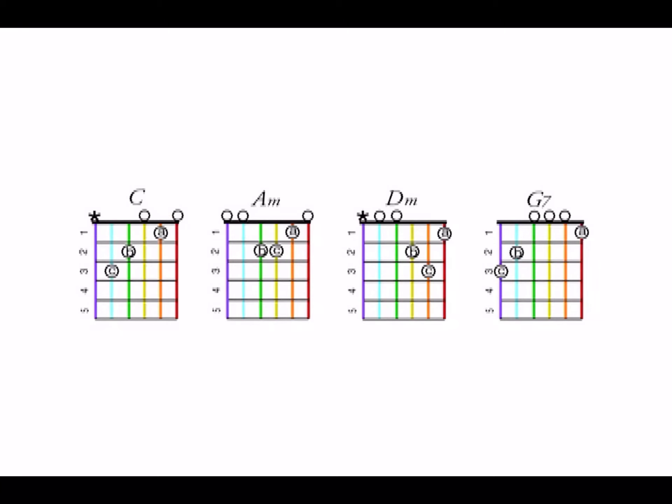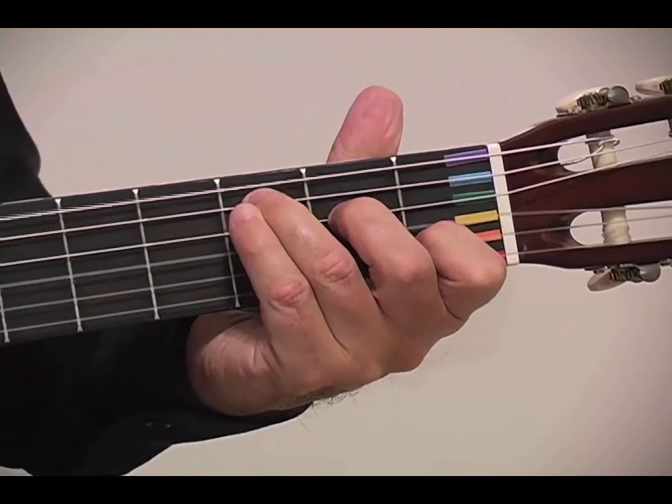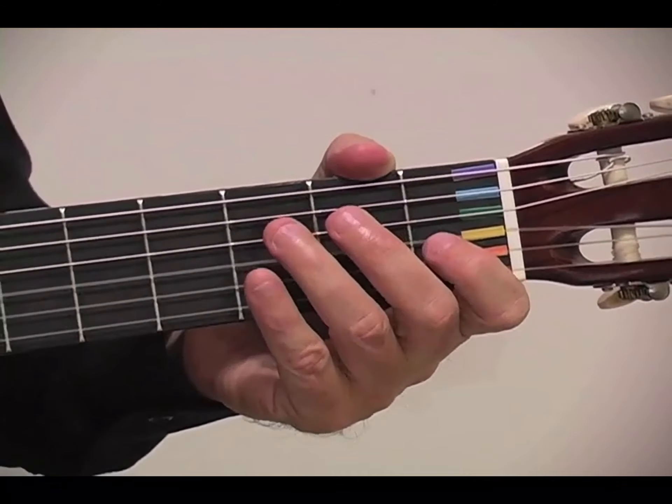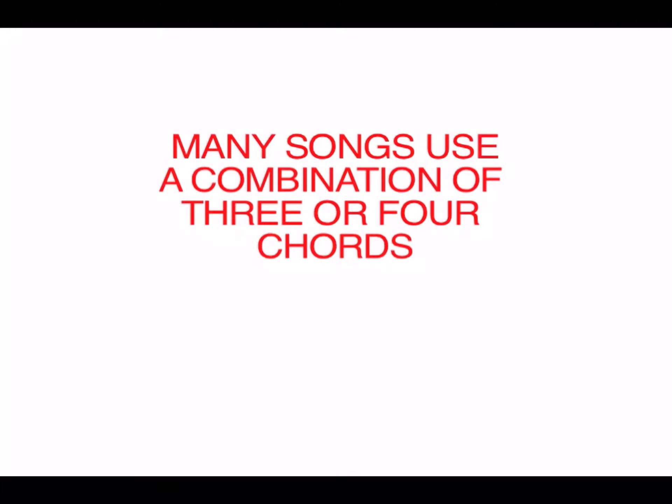Now, a combination of four chords on page 141. Let's see an example with C, or Do. Many songs are written in combinations of three or four chords.